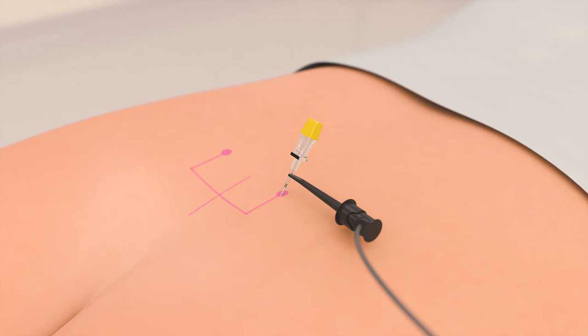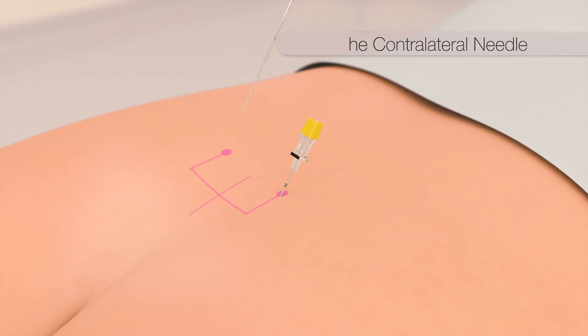This process ensures that the PNE lead is placed at the deepest location near the S3 nerve. The needle entry point for the contralateral side can be reassessed by measuring 4 centimeters lateral from the existing needle. The contralateral needle can be advanced, matching the angle of the existing needle. All testing should be repeated on the contralateral side.